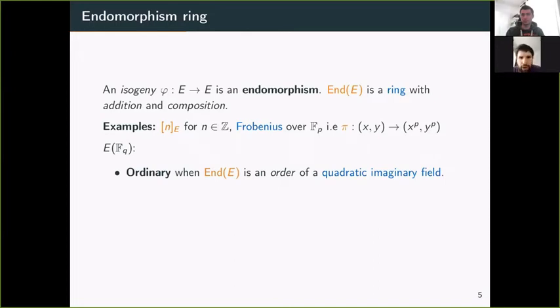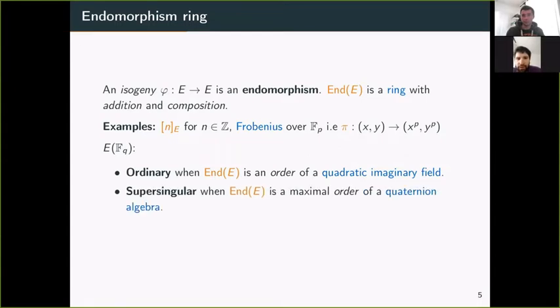The structure of the endomorphism ring allows us to classify curves into two categories. If the endomorphism ring of an elliptic curve over a finite field is commutative, in particular an order in a quadratic imaginary field, it's called ordinary. When the endomorphism ring is non-commutative, particularly a maximal order in a quaternion algebra, it's called supersingular. In this talk, we focus on supersingular curves.